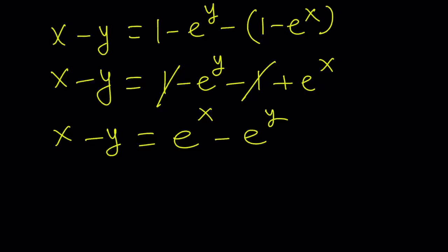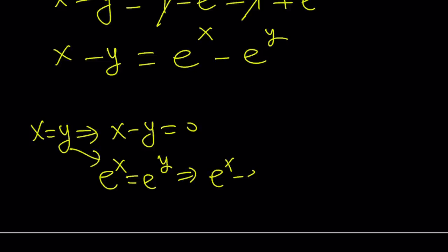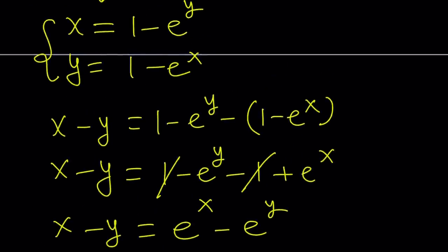Now, we got a nice equation. But if you look at this equation carefully, you're going to notice that if x and y are equal, then this is going to be true. Why is that so? Because if x equals y, then x minus y will be 0. And e to the power x will equal e to the power y because x equals y. And this implies e to the x minus e to the y equals 0. So these two are going to be equal, and that satisfies the equation.